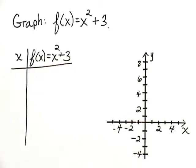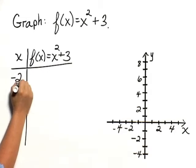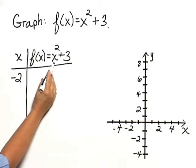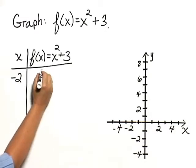I'm going to choose a number of values for x, and you might choose different values. So let's try negative 2 for x. This would give us the function value, negative 2 squared, which is 4, plus 3, which is 7.